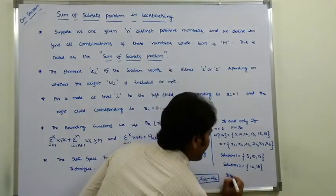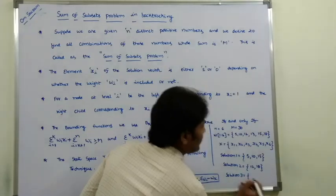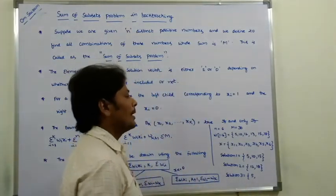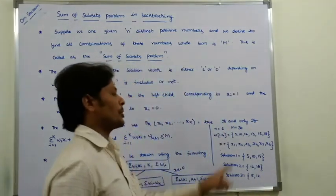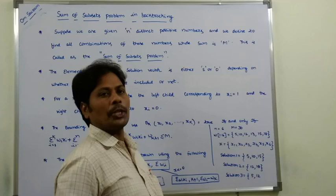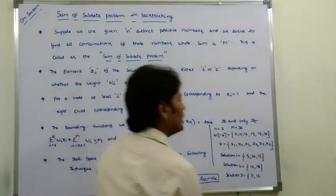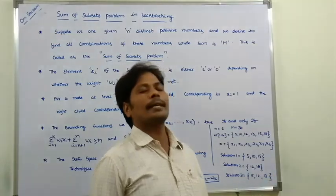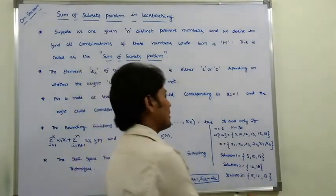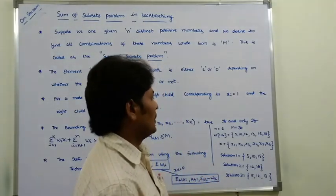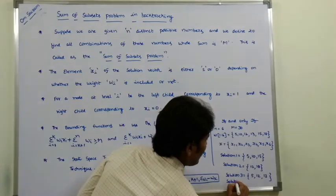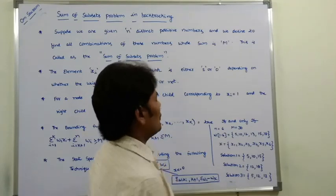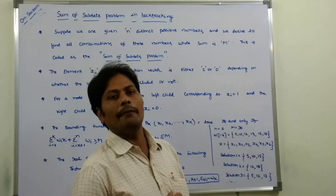Solution 3: we add the first weight 5 to the solution vector, then add the third weight 12. The sum so far is 5 plus 12. Next, we add the fourth weight 13: 5 plus 12 plus 13 equals 30, which equals M. This is another solution. So these are the three solutions for the given problem.